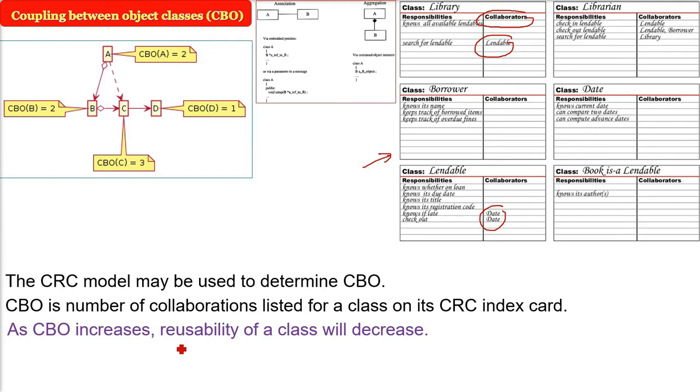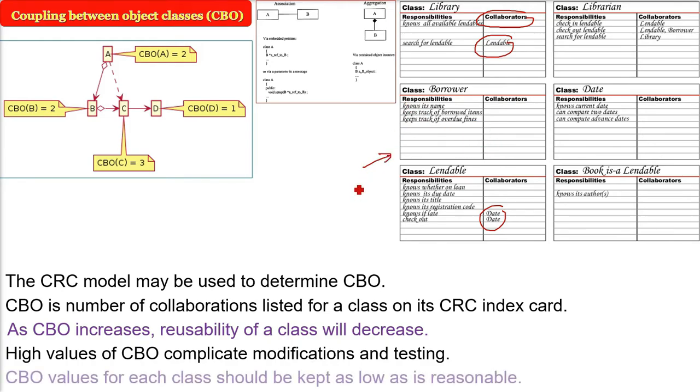As this CBO will increase, the reusability of class will decrease. High value of CBO means what? Because there are so many collaborating classes and coupling is there, so modification will be complicated and testing will be. The CBO values for each class should be kept as low as possible, as low as reasonable. Either you take the conventional or any, coupling has to be as low as possible.